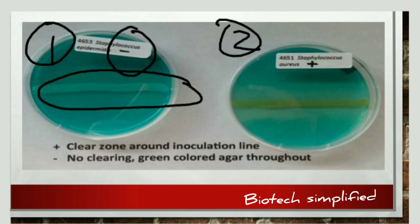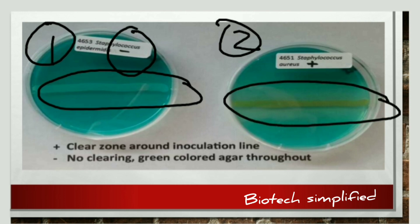In the second petri dish, Staphylococcus aureus is capable of hydrolyzing DNA. A clear colorless zone is visible around the colony, indicating that Staphylococcus aureus is positive in the DNase test.